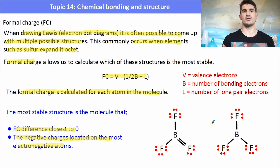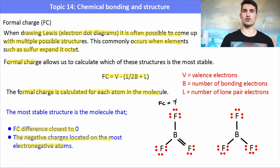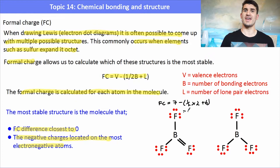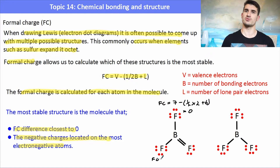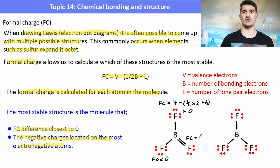If we take the examples on the left-hand side, we've got two different examples for boron trifluoride, BF3. We need to go through and calculate the formal charge on each of the atoms. For the first fluorine, it has seven valence electrons, and then we take away a half times the number of bonding electrons — every single covalent bond has two, so it's a half times two — plus the number of lone electrons, which in this case is six. That gives us a formal charge of zero. The other fluorine is in the identical environment, so it also has a formal charge of zero. The final fluorine has a double bond, so it will have a different formal charge, giving us a formal charge of one.